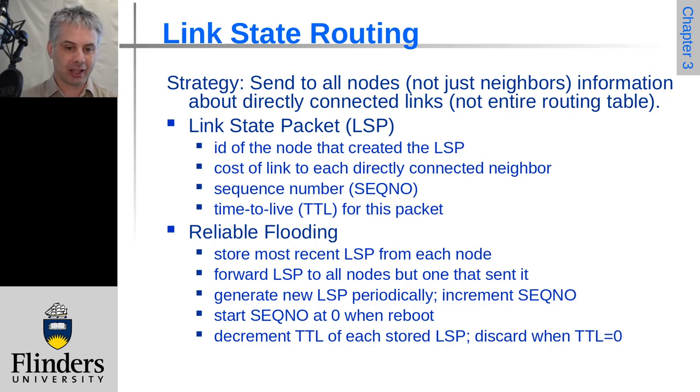So this goes out in a Link State Packet (LSP). The link state packet has to have the ID of the node that created it so that we can tell who's who, and it includes cost information about all of the directly connected neighbors so that we get to discover that bit of topology of the network around that node.